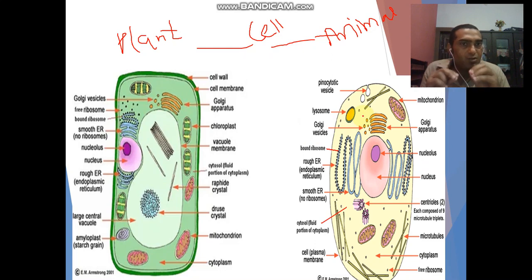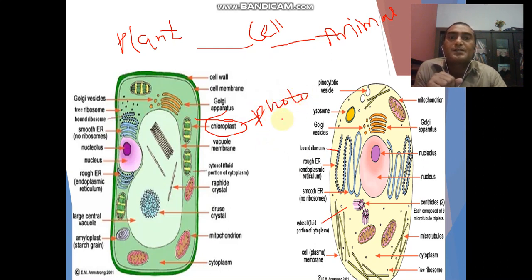First we will look at chapter 4. This is chloroplast, this one. Chloroplast present in plants while chloroplast is responsible for the photosynthesis, photosynthesis process.